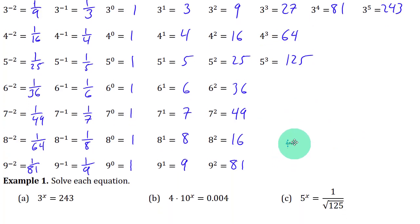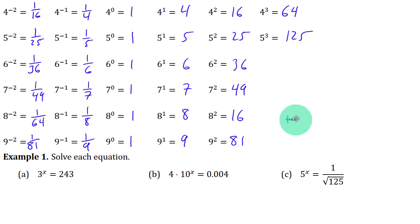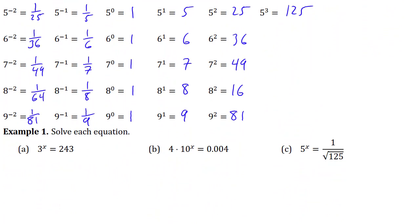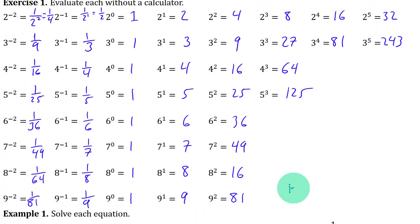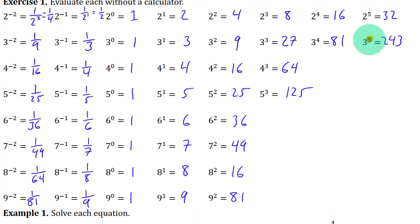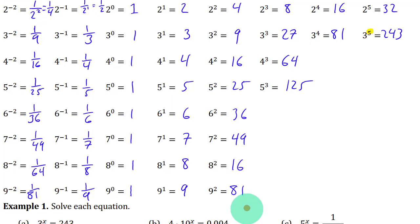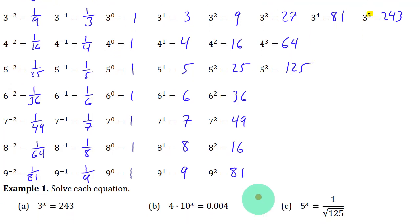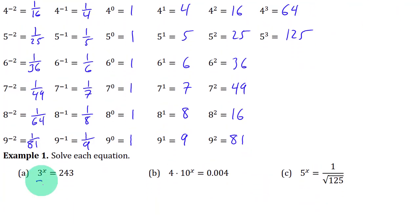So let's go on to example 1 here, where we want to solve some equations, meaning find the value of x that makes this true. So 3 to what power is 243? Well, let's look right over here. 3 to the power 5 is 243, so that means x is 5.